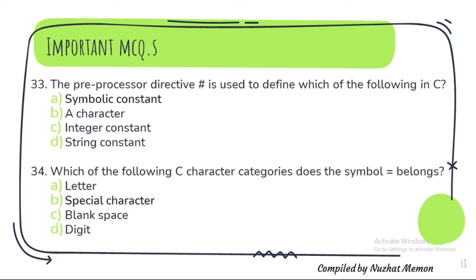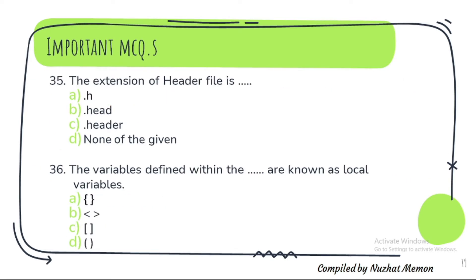Question 33: The preprocessor directive hash is used to define which of the following in C? It is used to define symbolic constant. Question 34: Which of the following C character categories does the symbol equal-to belong to? It belongs to special character. Question 35: Header file extension is .h — option A.